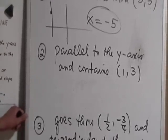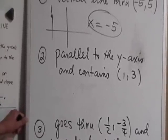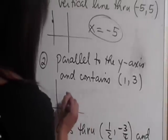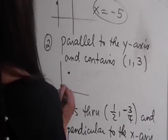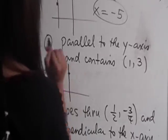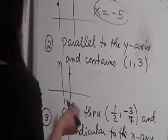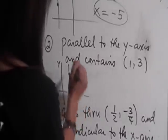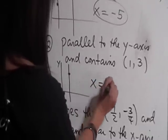The next problem is I have a line parallel to the y-axis and it contains the point 1, 3. So 1, 3 is somewhere here, and the line that I want is parallel to the y-axis. Notice I drew a vertical line right there, so it crosses the x-axis at 1, so the equation of this vertical line is x equals 1.